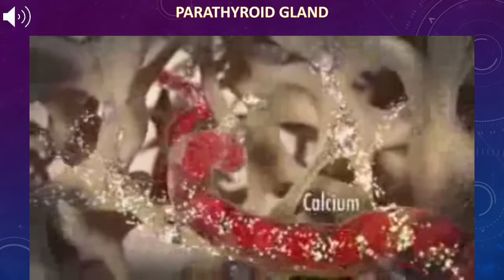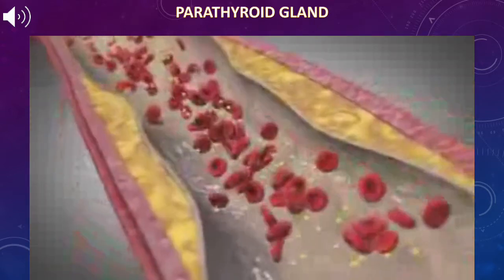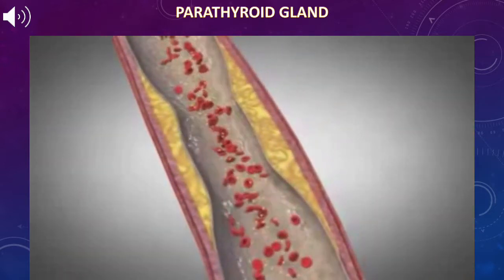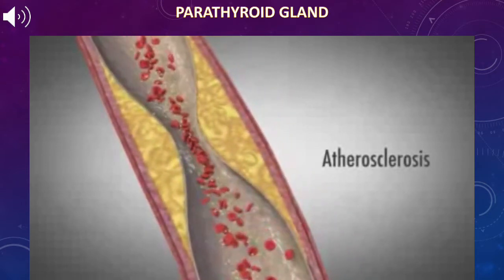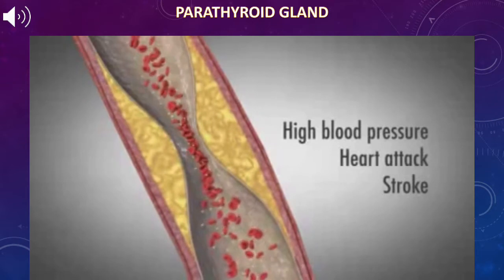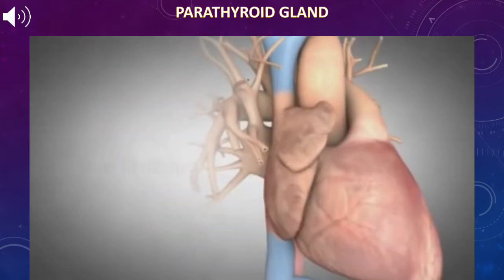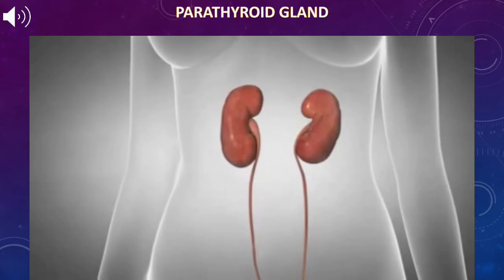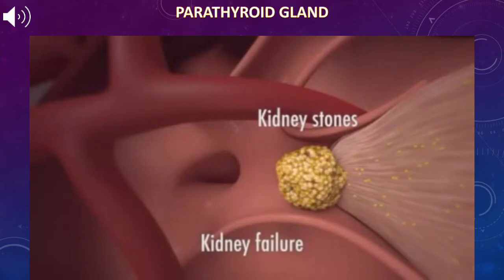The destruction of the bones releases calcium into the blood. High blood calcium levels are seen in almost all patients with a parathyroid tumor. The excess calcium builds up in the arteries, increasing atherosclerosis throughout the body, which can lead to high blood pressure and increased risk for heart attack and stroke. High calcium often affects the electrical system of the heart, causing atrial fibrillation and palpitations.